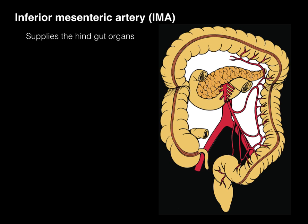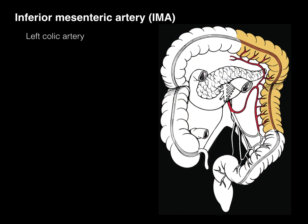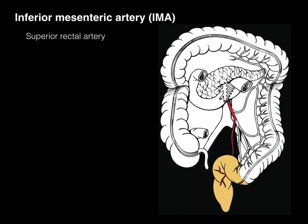The inferior mesenteric artery, or IMA, supplies hindgut organs including the distal transverse colon, the left colic flexure, descending colon, sigmoid colon, and rectum. The left colic artery supplies part of the transverse colon and descending colon. Then the sigmoidal arteries supply the sigmoid colon, and the superior rectal artery supplies the rectum and upper part of the anus.